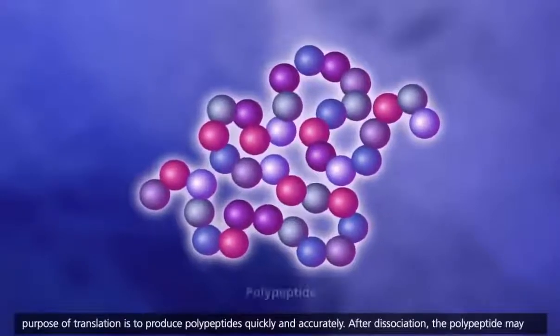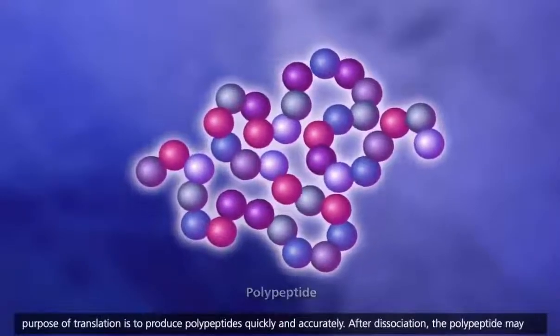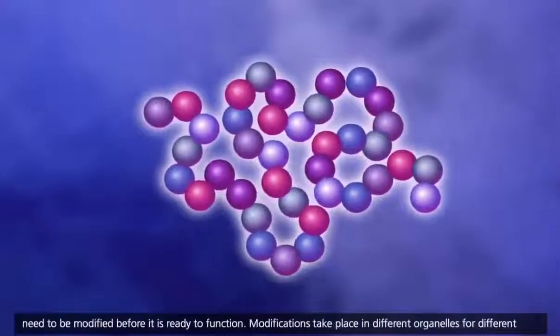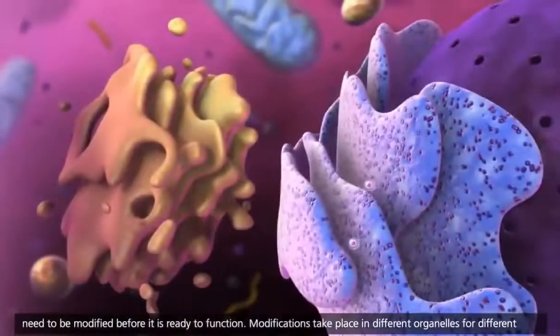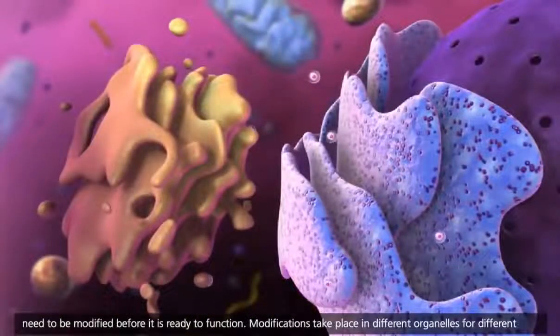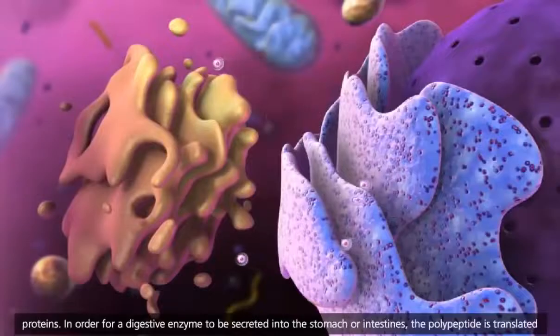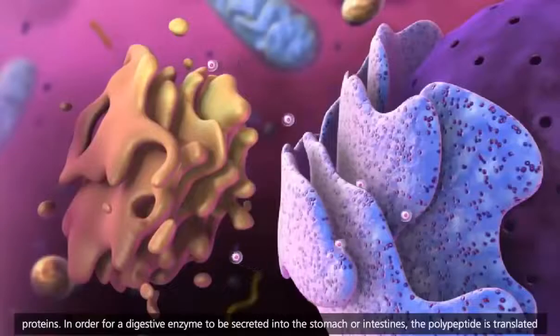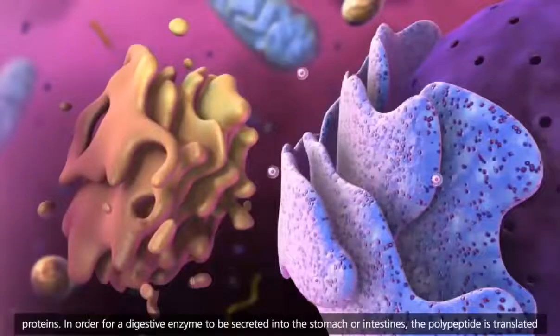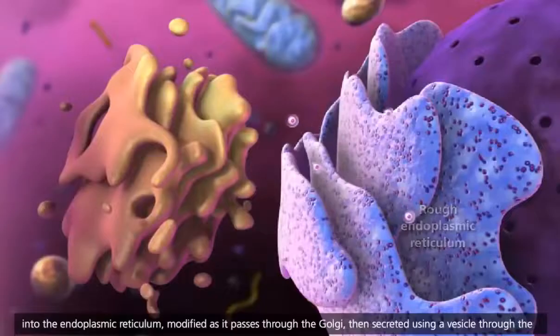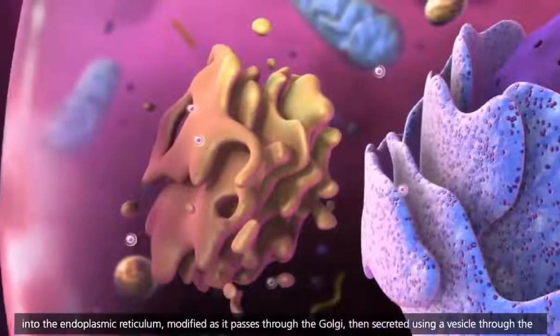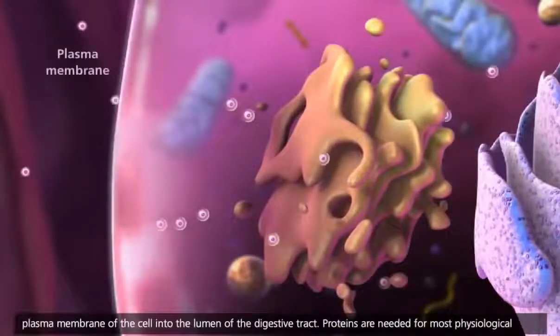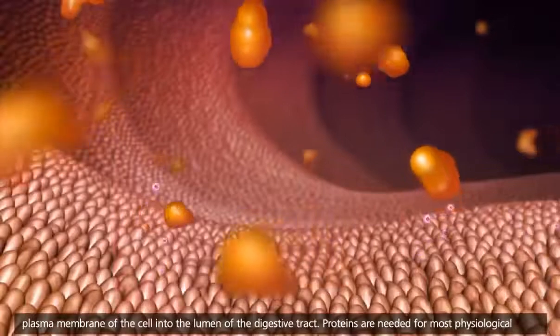The purpose of translation is to produce polypeptides quickly and accurately. After dissociation, the polypeptide may need to be modified before it is ready to function. Modifications take place in different organelles for different proteins. In order for a digestive enzyme to be secreted into the stomach or intestines, the polypeptide is translated into the endoplasmic reticulum, modified as it passes through the Golgi, then secreted using a vesicle through the plasma membrane of the cell into the lumen of the digestive tract.